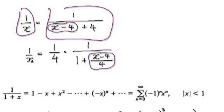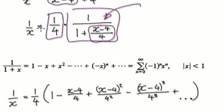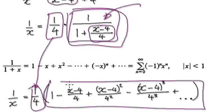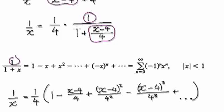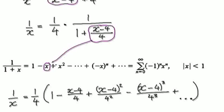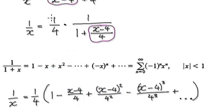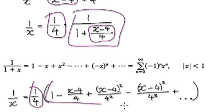So 1 over x, rewrite it as one block multiplying another block. We need to expand this part. This quarter here stays out front, and then this block — 1 over (1 plus bubble) — becomes the geometric series. Because with 1, 1, 1 — your x is 1, your bubble is (x minus 4) over 4 — you get: 1 minus bubble plus bubble squared, and so on, alternating signs.